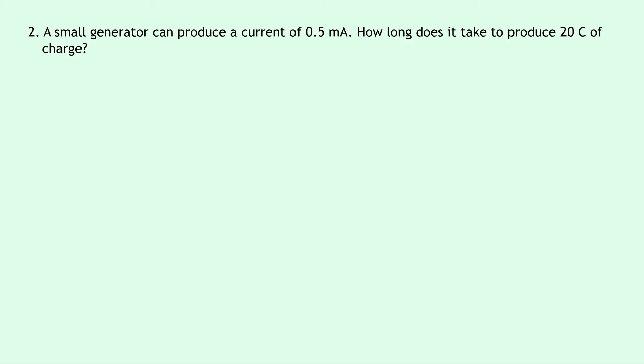Well writing down what we know from the question this time, we know that time is what we're trying to find. Charge Q is 20 coulombs and the current I is 0.5 milliamps. But remember we need to convert from milliamps into amps, so that's the same as 0.5 times 10 to the minus 3 amps.